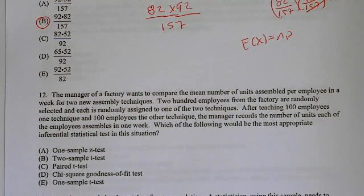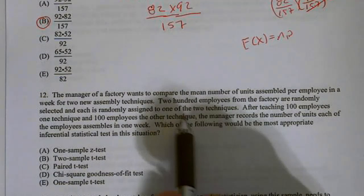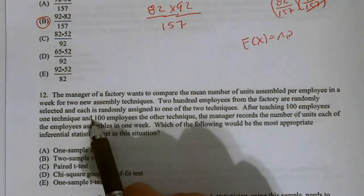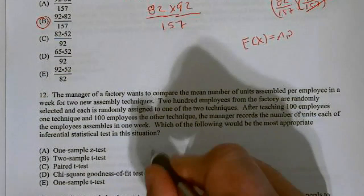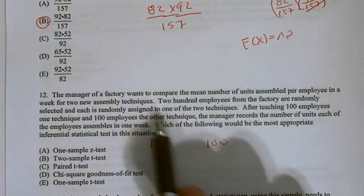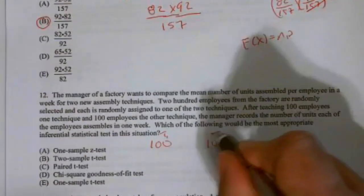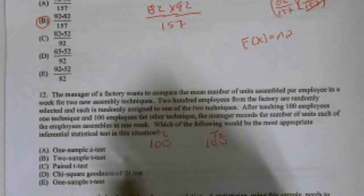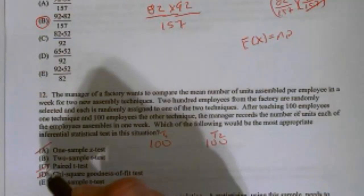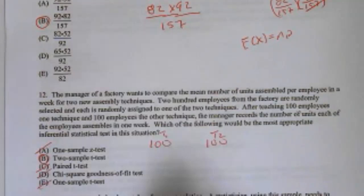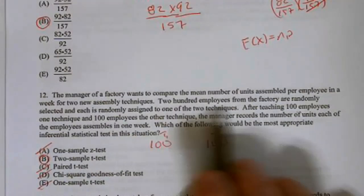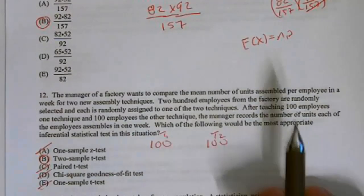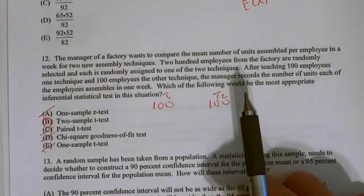Number 12, the manager of a factory wants to compare the mean number of units assembled per employee in a week for two newly assembled techniques. 200 employees from the factory are randomly selected, and each is randomly assigned to one of the two techniques. So basically, we have two groups. We have one group with 100, and one group with another 100. Which of the following would be the most appropriate inferential statistics in this situation? Well, we have two different groups. That gets rid of one sample, paired. It's not a chi-squared test. The only thing it could be would be a two-sample t-test. And because we didn't know the mean, we did not know the standard deviation of the two groups prior, it could only be a two-sample t-test because we have two separate groups.